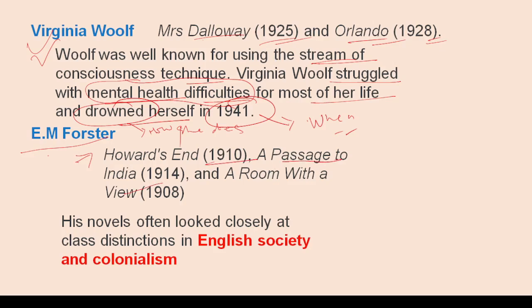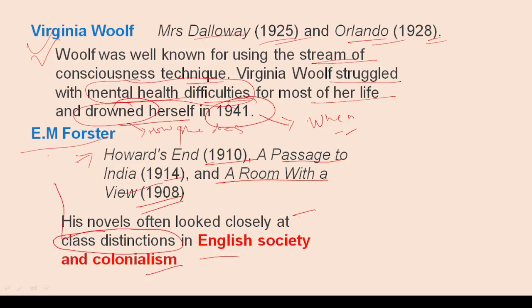E.M. Forster was a fiction writer. His works include Howards End (1910), A Passage to India (1924), and A Room with a View (1908). His novels often looked closely at class distinction in English society and colonialism, so class distinction was a special theme in his works.